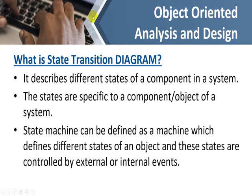State transition diagram describes different states of a component in a system. In a software we have different components and each component attains some state after some event or some activity. A state machine can be defined as a machine which defines different states of an object, and these states are controlled by external or internal events.